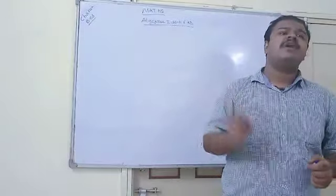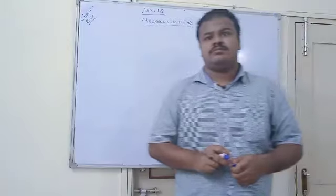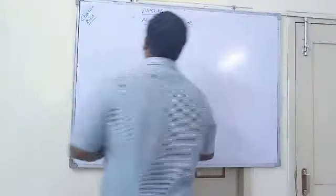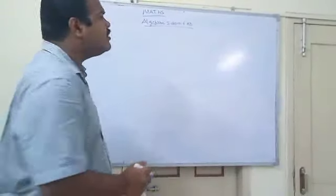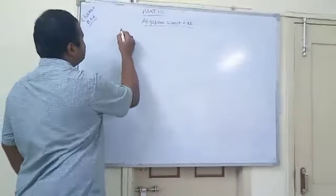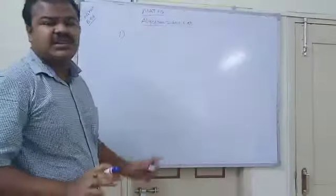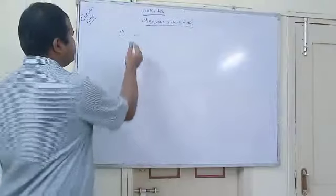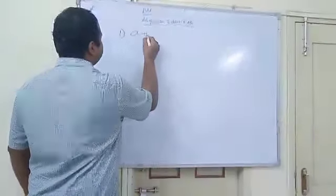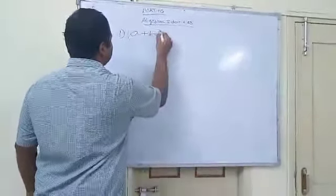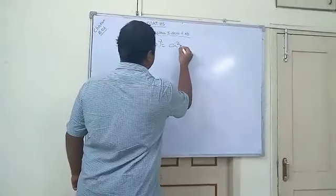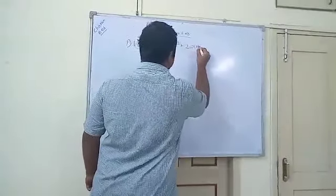Currently, I am discussing algebraic identities. Coming to algebraic identification, there are some basic formulas and examples on it. You know, A plus B whole square is equal to A square plus 2AB plus B square.